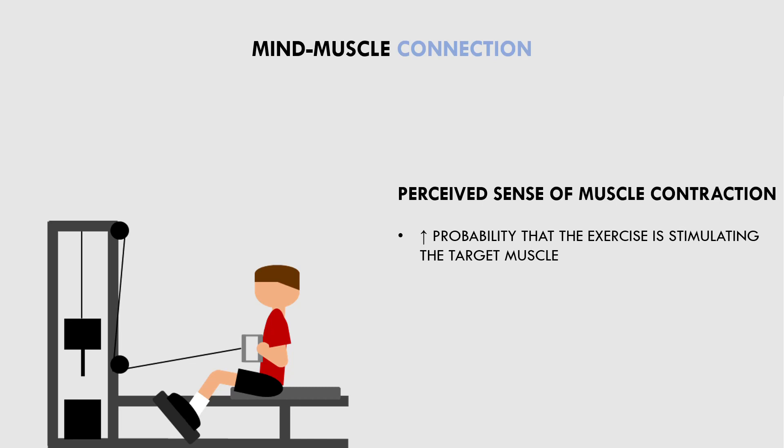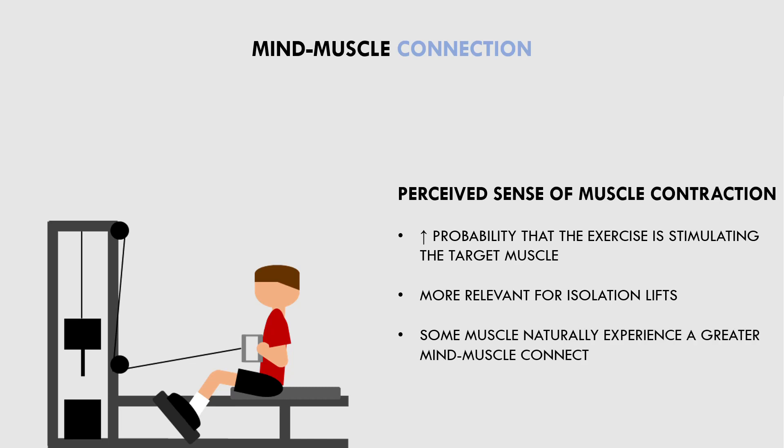It should be noted that the mind-muscle connection is more relevant for some exercises over others — generally more relevant to isolation lifts over compounds. During isolation lifts there is only one primary muscle working, so full attention can be focused on this muscle. During compound exercises where accessory and stabilizer muscles are working too, we are less likely to feel a strong mind-muscle connection in a single muscle group because our senses are occupied with many other feelings around the body. This doesn't mean that the hypertrophic stimulus is inherently worse; it just means that the mind-muscle connection aspect won't be as reliable for compounds.